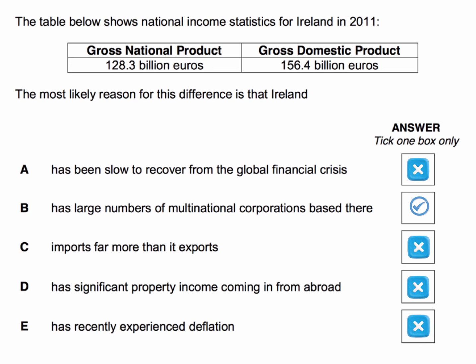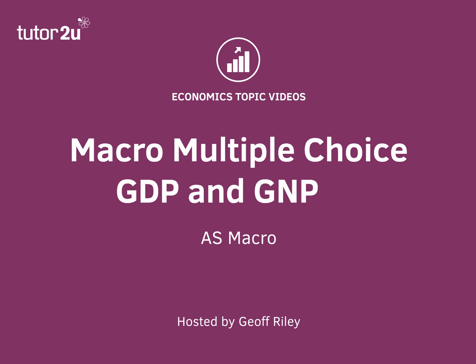So the answer has to be B. It comes about from understanding and knowing the difference between GDP and GNP. Thank you.